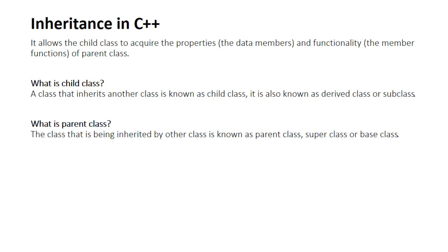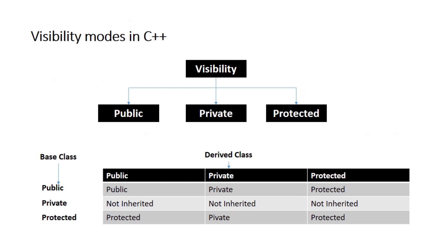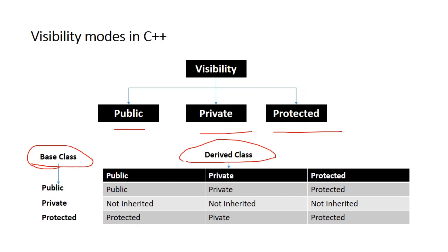That is what inheritance is. Child class and parent class — what are their visibility modes? Any class has a visibility mode, and there are three types of visibility modes: public, private, and protected. The base class and derived class both have these three visibility modes.